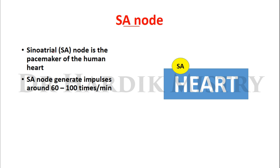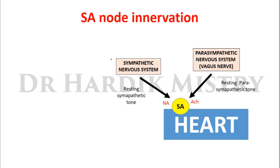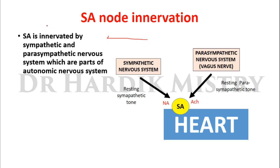The sino-atrial node, which is the SA node, is the pacemaker of the human heart, and the SA node generates impulses around 60 to 100 times per minute. The SA node is innervated by the sympathetic and parasympathetic nervous systems, which are parts of the autonomic nervous system.